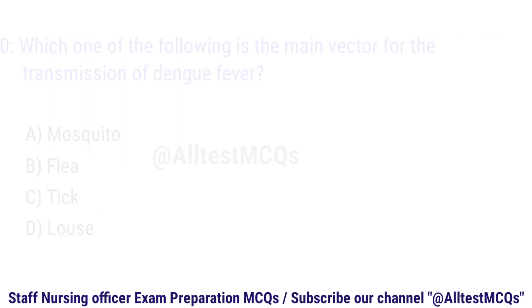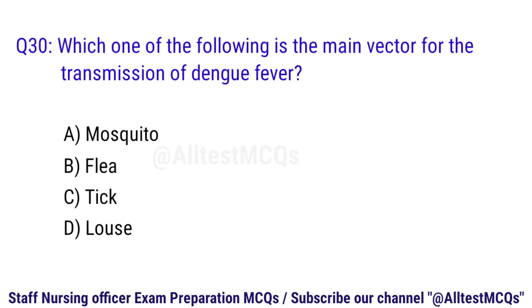Question 30. Which one of the following is the main vector for the transmission of dengue fever? The correct option is A. Mosquito.